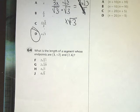Number 64 says, what is the length of a segment whose endpoints are 3, negative 2, and 7, 6? There's a couple ways you can go about doing this one.